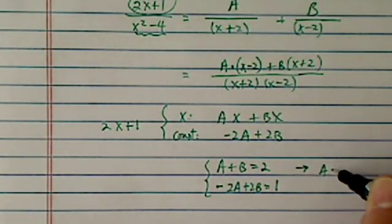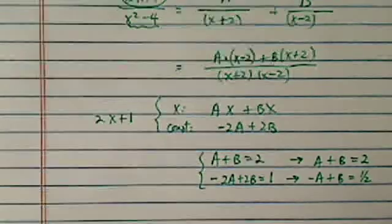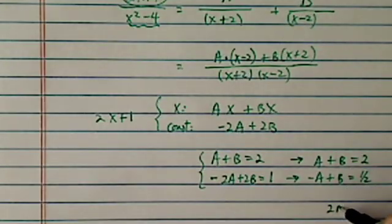Let's simplify a little bit. So A plus B is equal to 2, and then I have over here, minus A plus B is equal to half. From there, if I add those two, I have 2B is equal to 2 plus half.